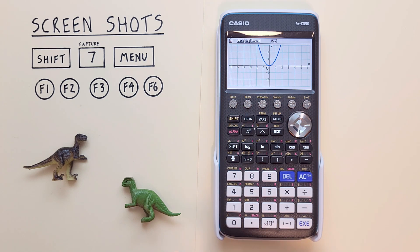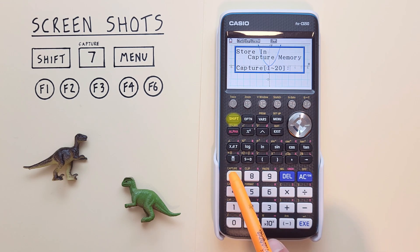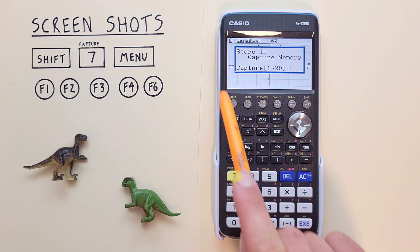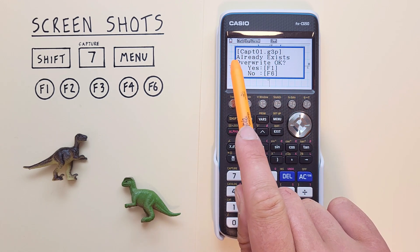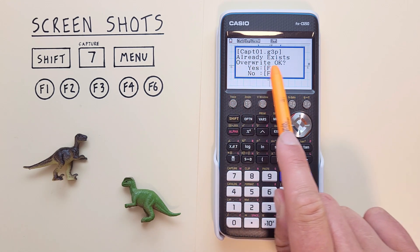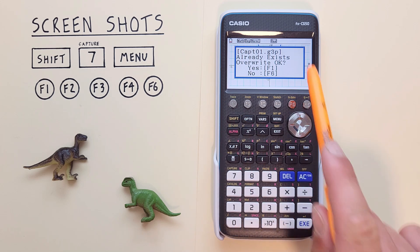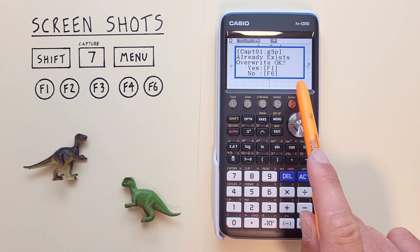Again, we can screenshot that with the shift seven to bring up our screenshot menu. And if we try to save that in a memory slot that already has something in it, like our number one, we'll see this saying capture one already exists. So we already have something stored there, do we want to overwrite it?